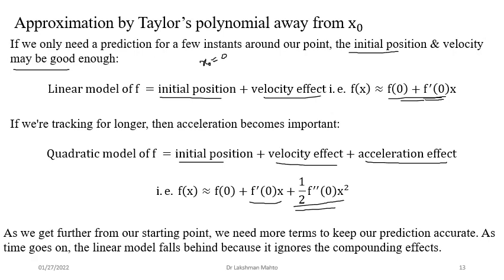As we get further from the starting point, we need more terms to keep our prediction accurate. The right-hand side — the Taylor polynomial — is easy to compute because it involves only powers of x. The function f(x) may be complicated to evaluate at x directly, but computing the polynomial (x, x², x³, etc.) is straightforward. These computed values are our predicted values. Whether this predicted value is close to f(x) is what we discuss through Taylor's theorem and approximation.